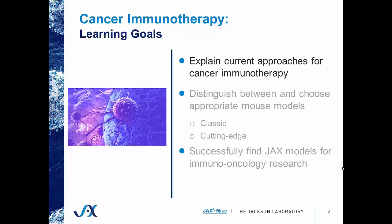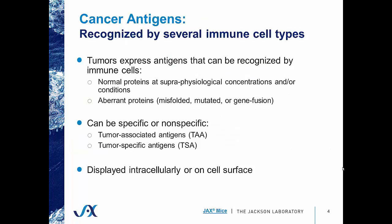Let's start with explaining the current approaches for cancer immunotherapy. Cancer is the process by which a cell loses its ability to regulate its growth and begins to proliferate in an uncontrolled fashion, potentially invading other organs or spreading throughout the body. Immune cells have the ability to recognize and attack tumor cells through antigens or protein products that are expressed abnormally by tumors.